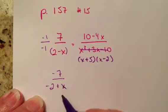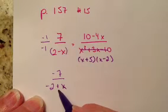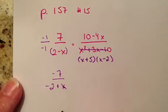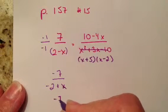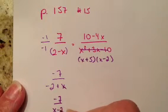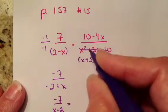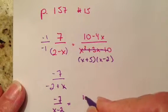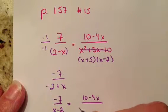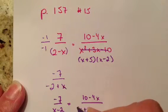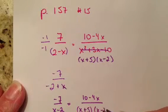But if you remember, addition, which is what's in the middle, is commutative. So I can reverse the order of those two elements. So I get negative 7 over x minus 2. And then this, I'm just going to bring it down. So I have 10 minus 4x all over x plus 5 and x minus 2.